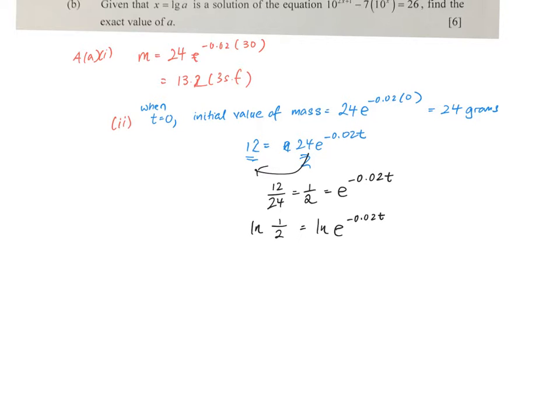Alright, so if I ln half, this is basically ln 0.5, and ln e to the power by the power of ln is just 1. So ln 0.5 divided by negative 0.02, that will be equals to t, and t will just be basically equals to 34.7, to 3 significant figures.